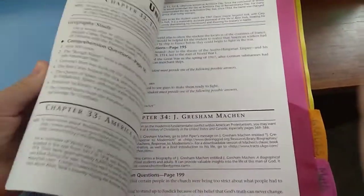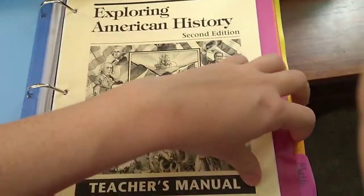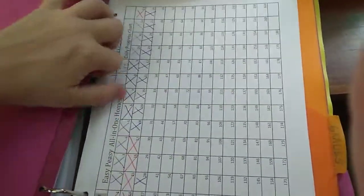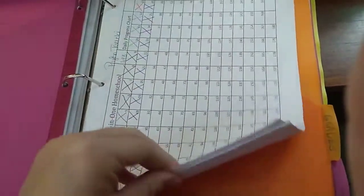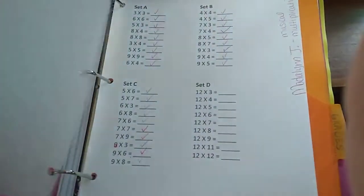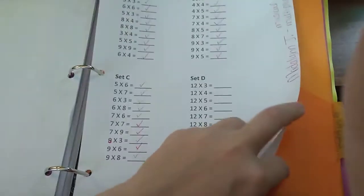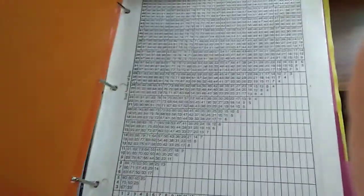We have a math tab, which is a place for our math trackers for Easy Peasy, and also we use these printables to keep track of our Musical Multiplication.